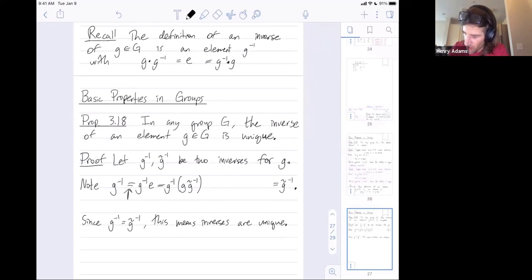Okay. So this first equality was by the definition of the identity. This next equality is, I'll just say definition of inverse. Right, g tilde inverse is one of the inverses for g. So their product is the identity. Now I'm going to use associativity. Associativity allows me to group the parentheses on the first two terms instead of the last two terms. So this is associativity.